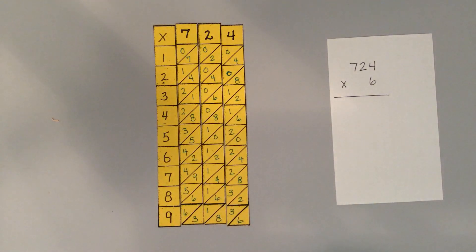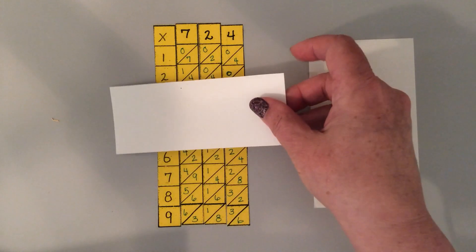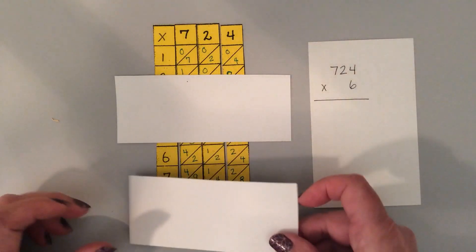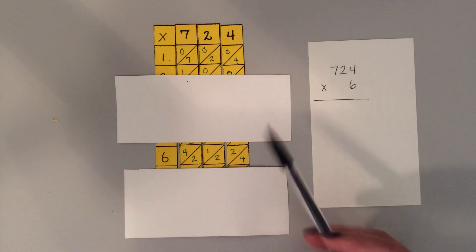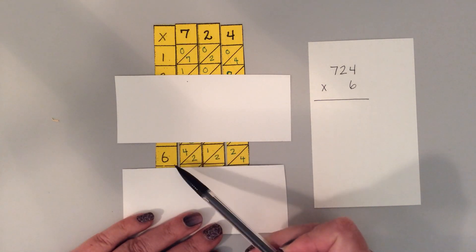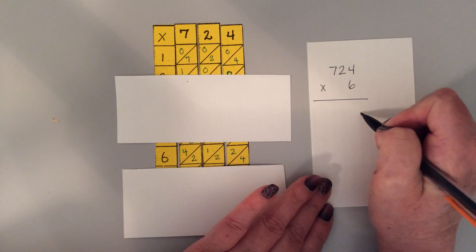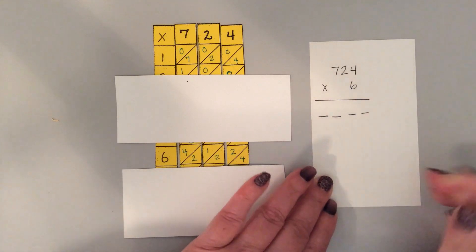Because it's times 6, I'm going to just highlight the row, the times 6 row. Looking at the times 6 row, I'm counting my diagonals. I've got one diagonal, two, three, four. So that means I'm going to have a ones place, a tens place, a hundreds place, and a thousands place.